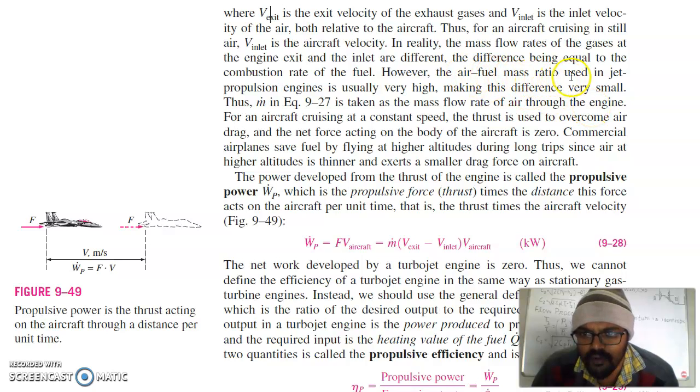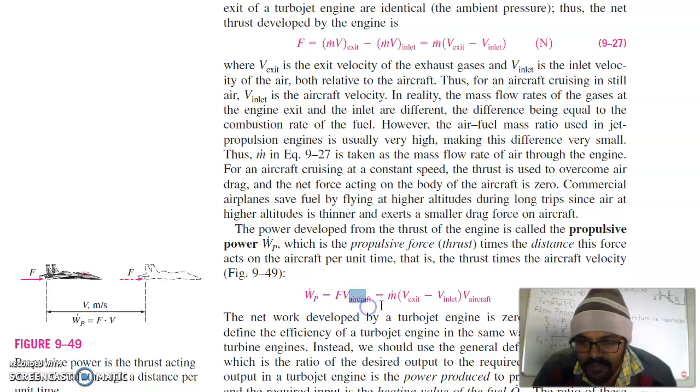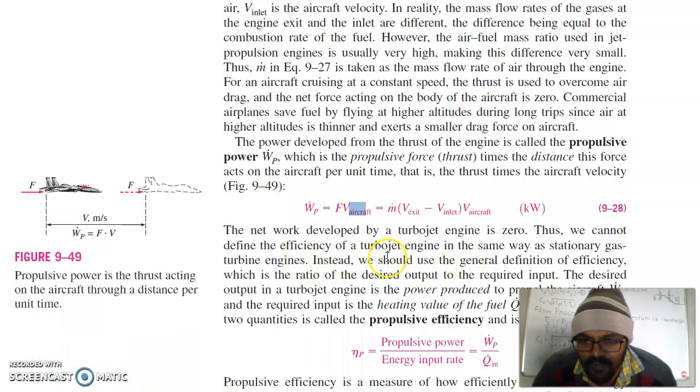M dot is taken as the mass flow rate of air through the engine. Air fuel mass ratio using jet propulsion engine is usually very high making the difference very small. The power developed from the thrust of the engine is called propulsive power WP dot which is propulsive force thrust times the distance. This force acts on the aircraft per unit of time, that is the thrust times the aircraft velocity. So, the propulsive power is equal to force which we have calculated earlier, M dot V exit minus V inlet times V aircraft.